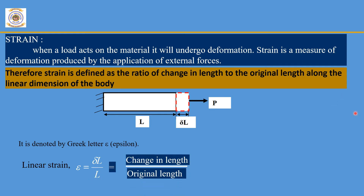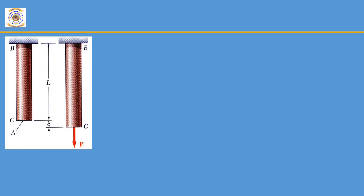An important property of linear strain is that it is a unitless quantity. The change in length delta L is in meters or millimeters, and the original length L is also in meters or millimeters, so both units cancel. Now let us consider a few case studies.